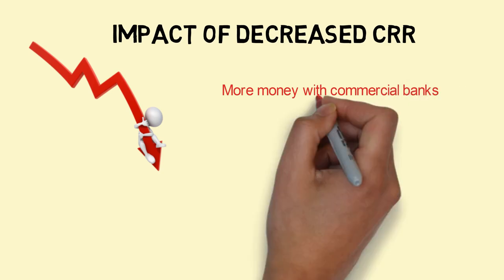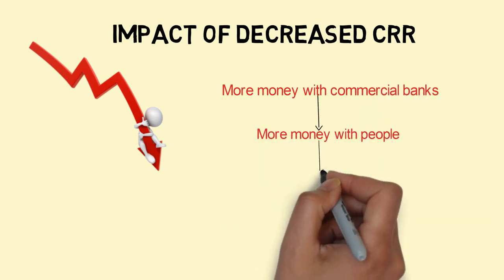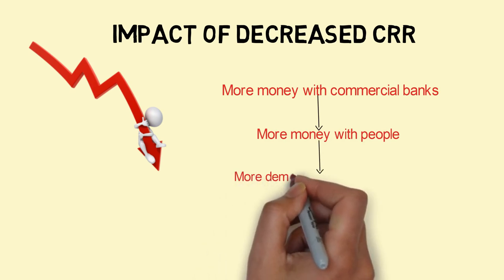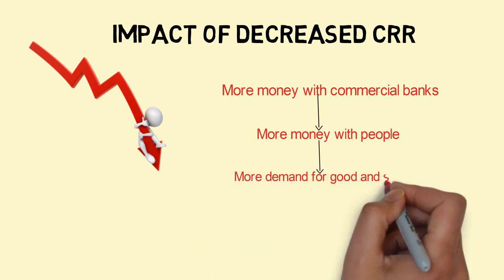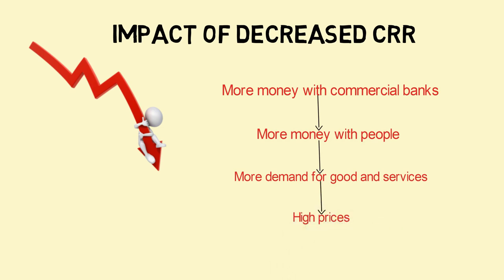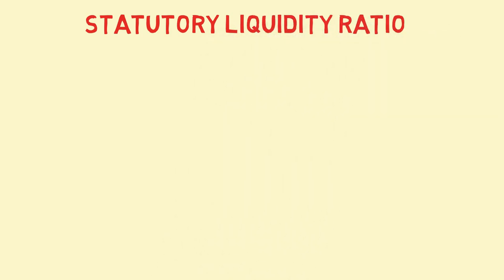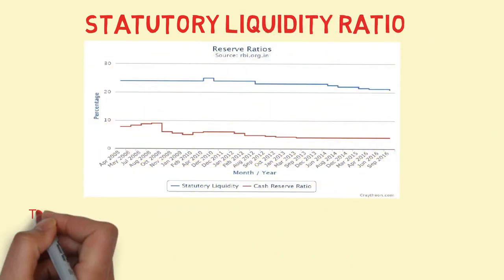The impact of decreased CRR: more money with commercial banks leads to more money with people, which leads to higher demand for goods and services and higher prices. CRR should be aligned with supply and production levels. If people are producing more, they deserve to spend more. Decreased CRR provides a short-term fix as it increases demand.